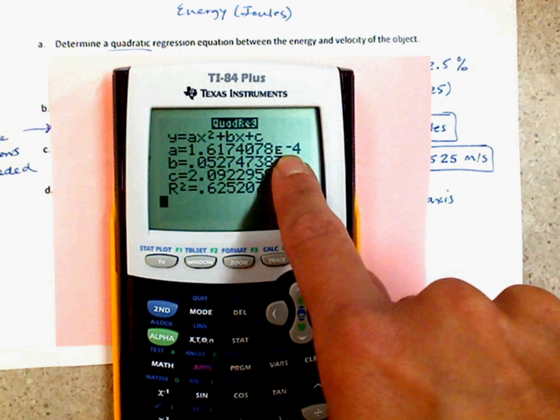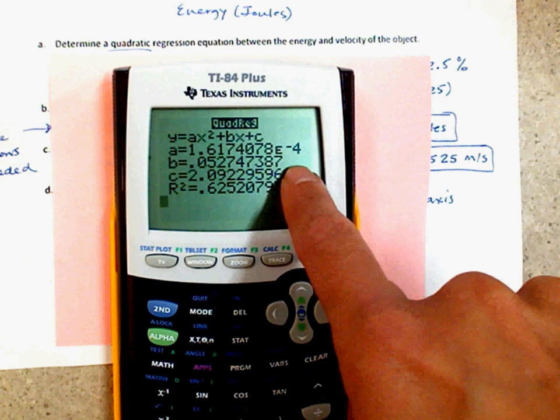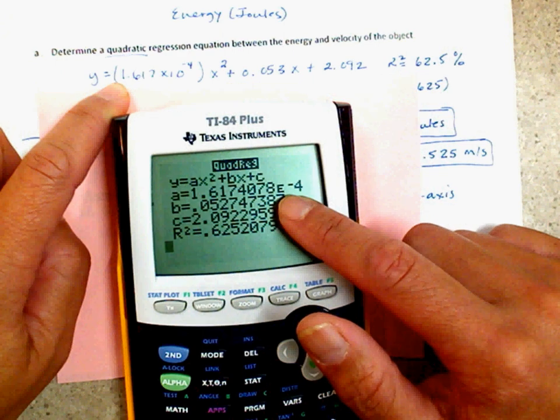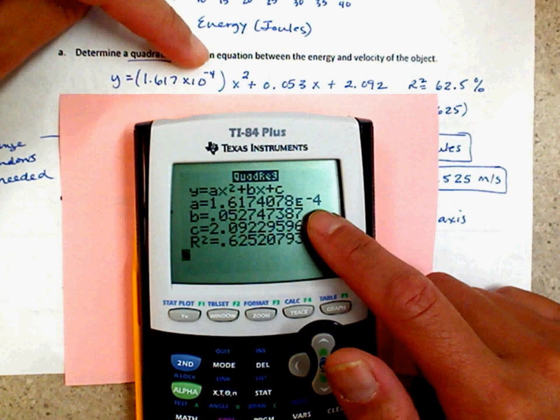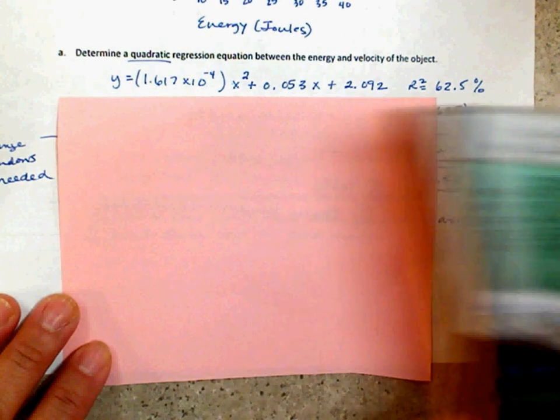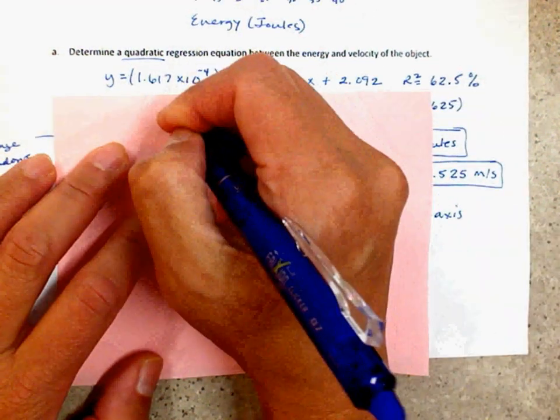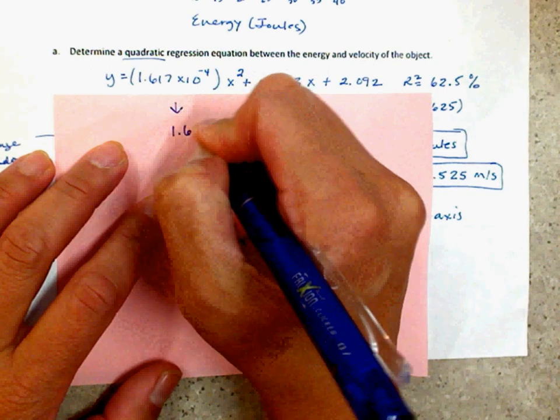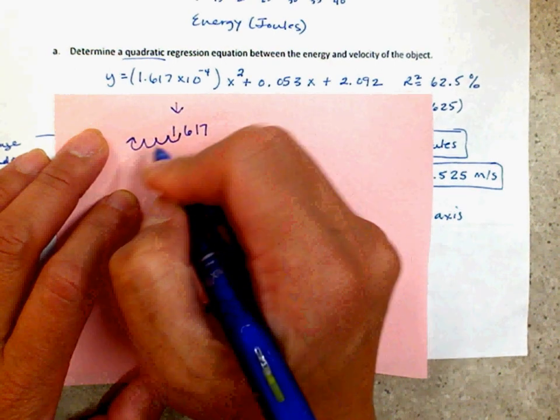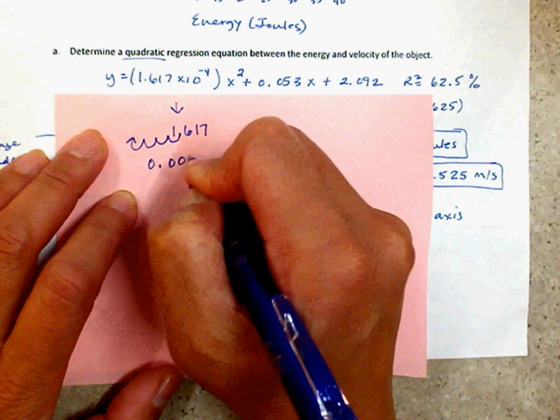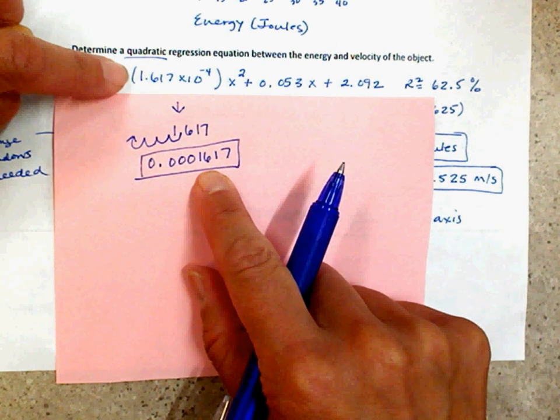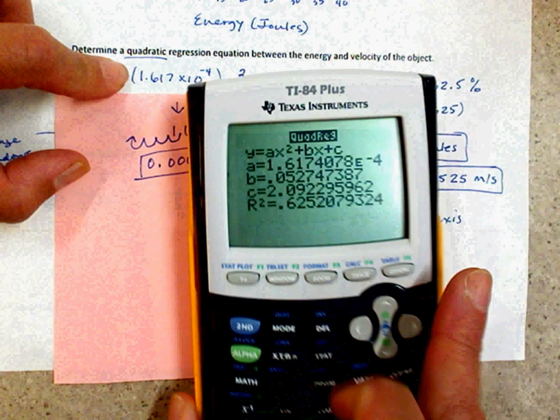You guys see that E right there? That E is times 10 to the negative 4. Alright. So, I wrote mine like this. 1.617. Do not write E. Write times 10 to the negative 4. It's an exponent. X squared plus my Bx plus my C. What does this number mean? Well, let me show you what this number means. This means 1.617, negative 4. Means it's a small number. 1, 2, 3, 4. So, this is the same as 0.1, 2, 3, 1, 6, 1, 7. You can write it like that. Or you can write it like that. It's the same thing. Do not write that E.